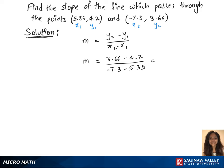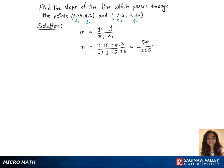This gives us the slope value 54 over 1265. That's the slope for the given points.